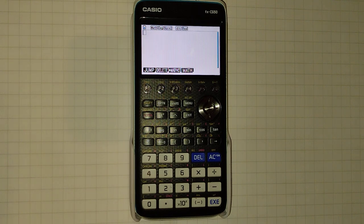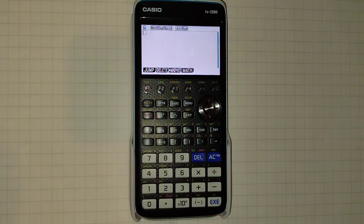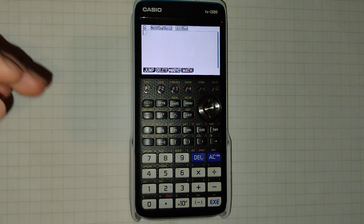The first thing to establish is that this calculator cannot perform symbolic differentiation. That would require a computer algebra system, or CAS, and that is not allowed in the bulk of exams, including all UK exams.